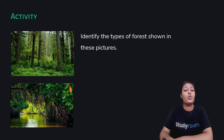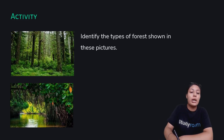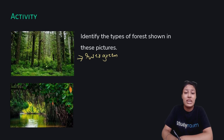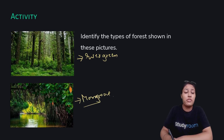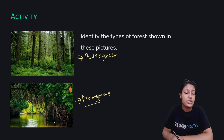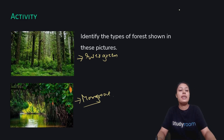Here's a fun activity — identify the type of forest seen in the pictures. The first is obviously evergreen forest because the trees are in very high volume. The second is mangrove forest — you can identify it because there is a river or stream flowing and the roots of the trees are under the water. That's about it for types of vegetation. We will continue to learn more about wildlife in the next video.